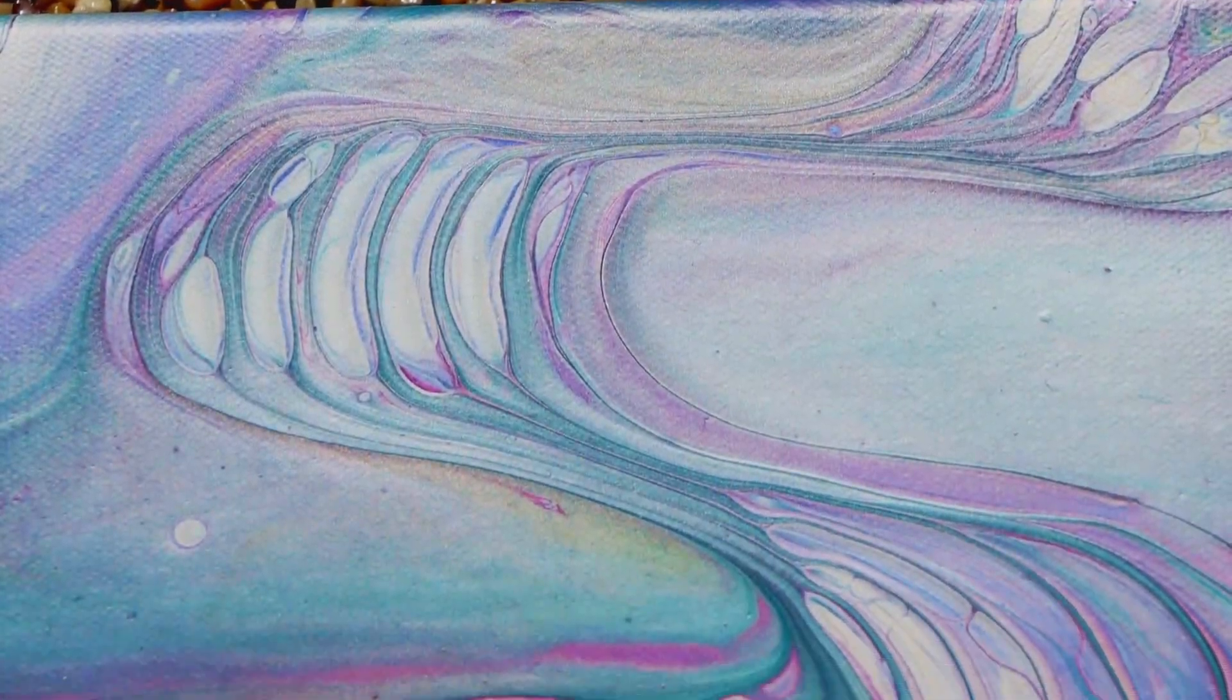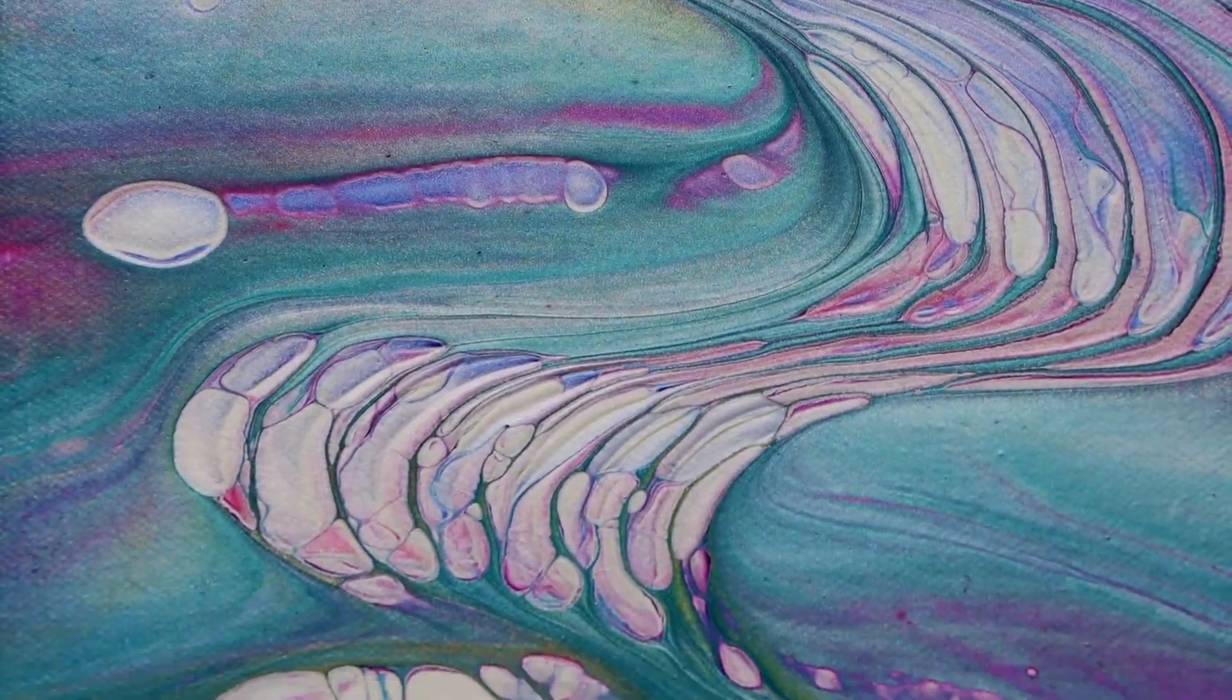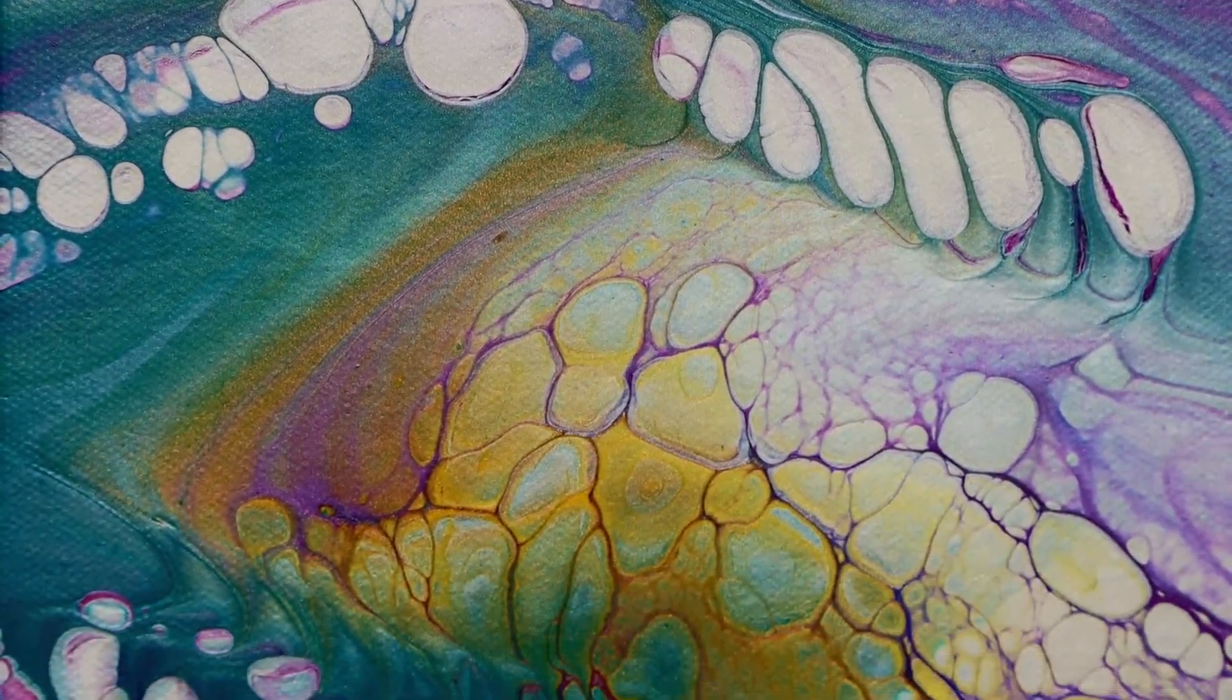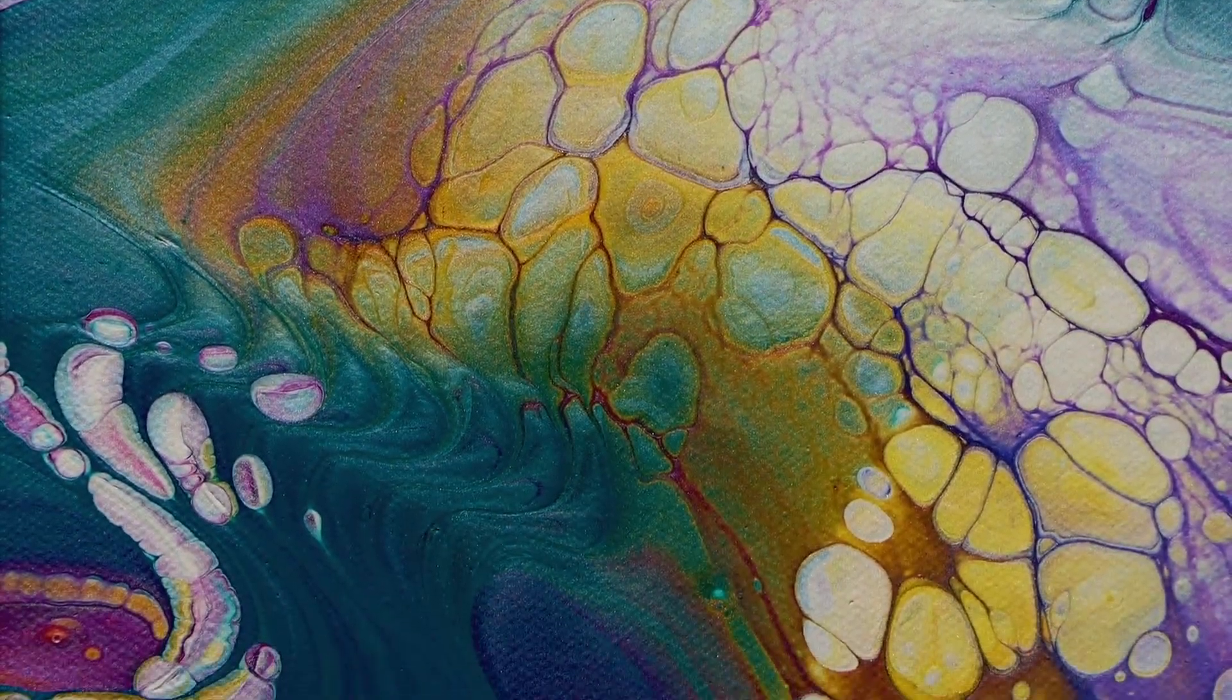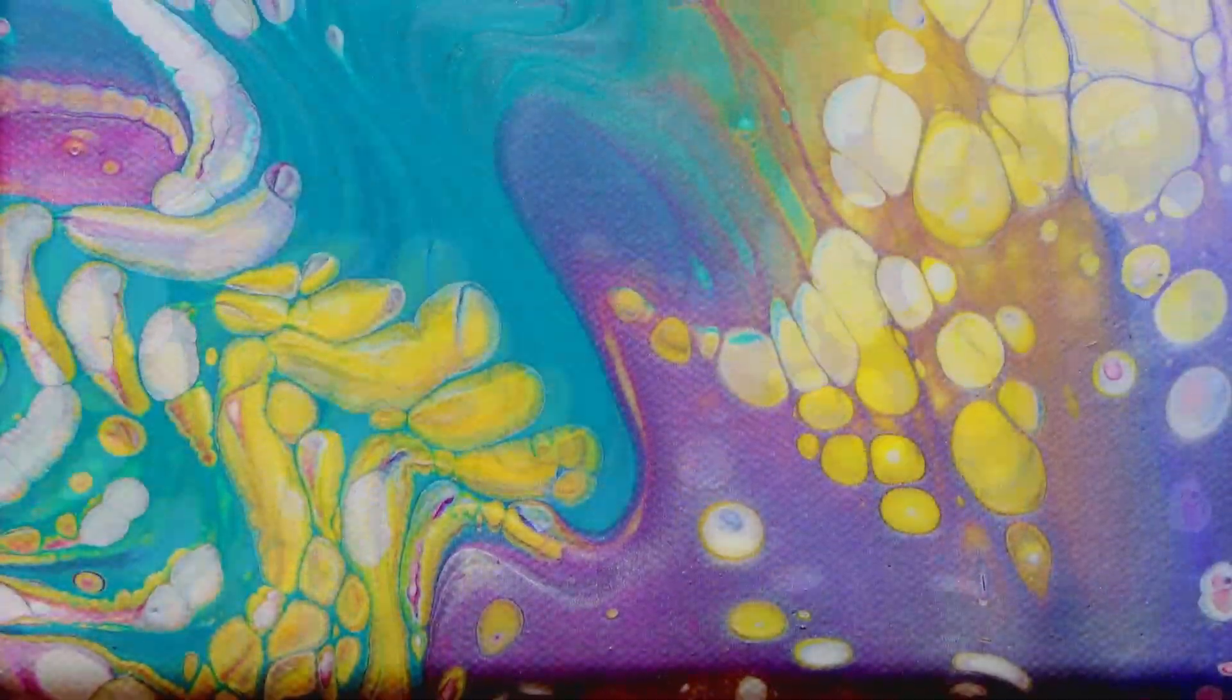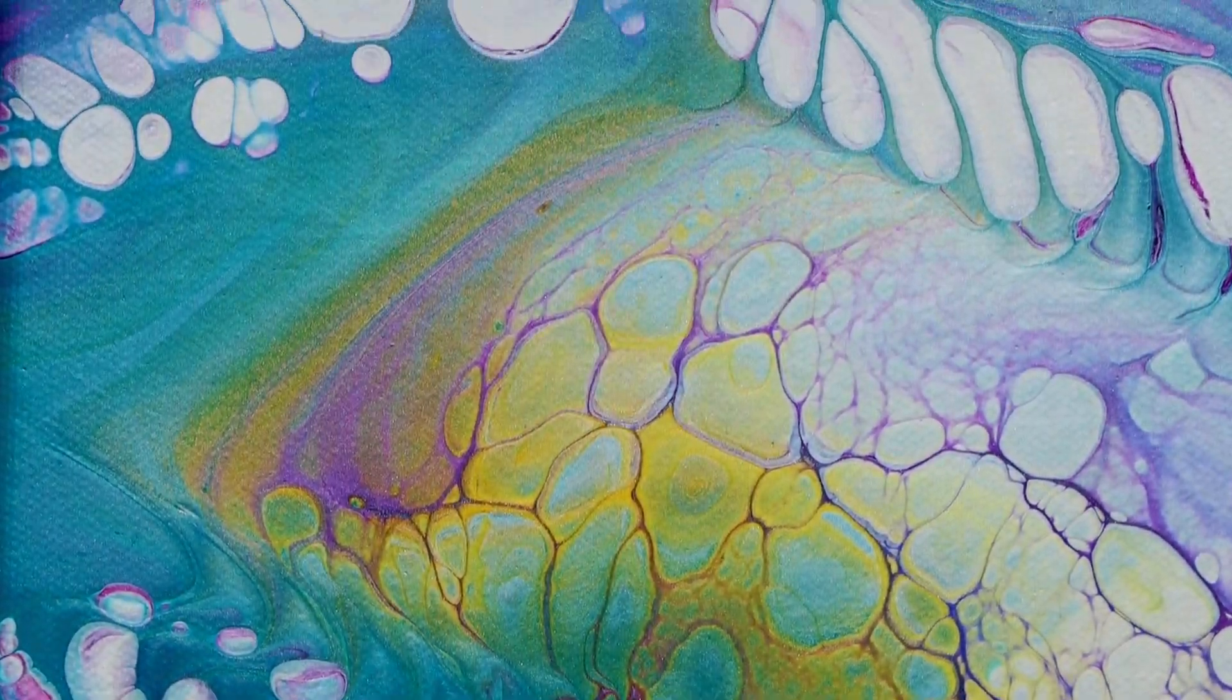And she thought it looked like half of it looked wintry. And then the other half looked like the flowers in spring. So like that part there with the yellow and then the purple reminded her of irises. Which I love. I love a gorgeous iris.